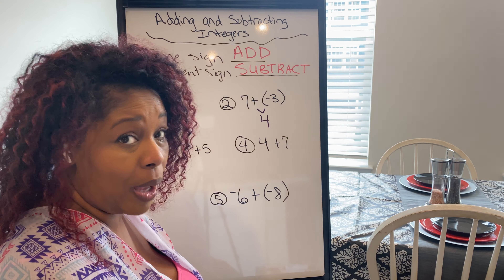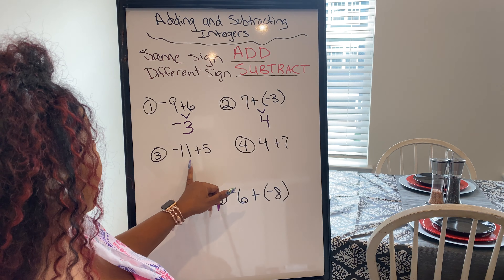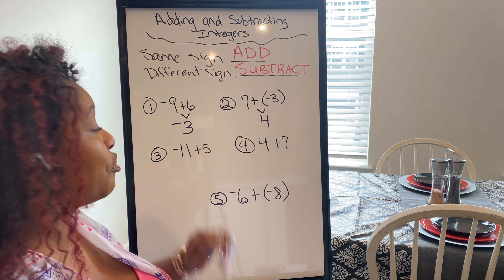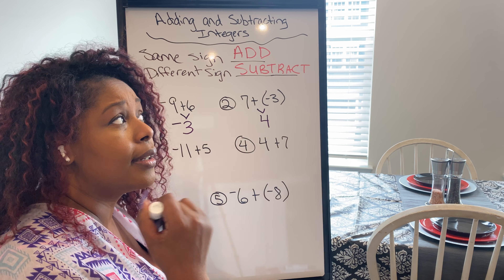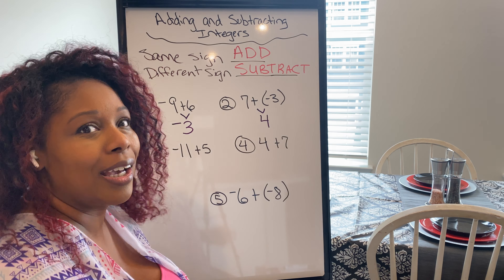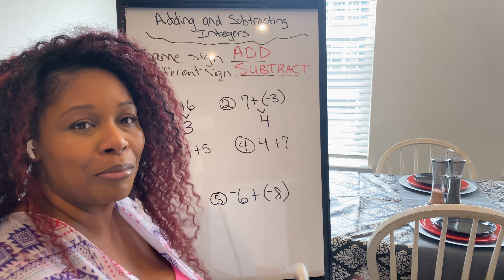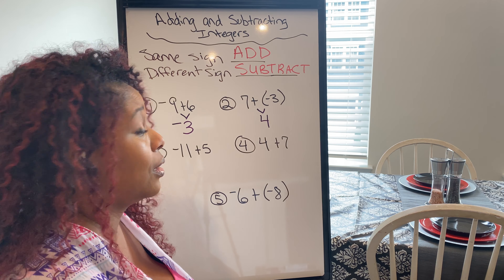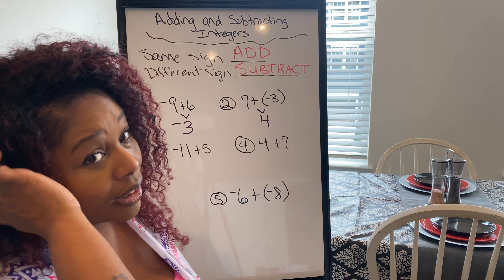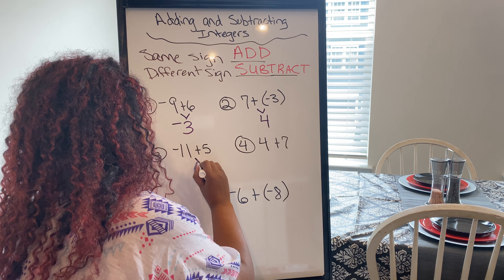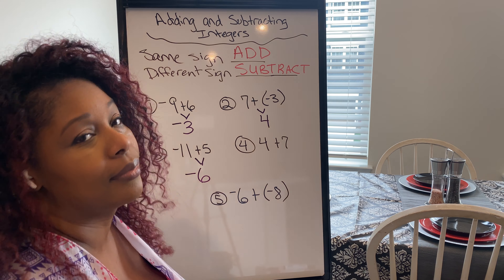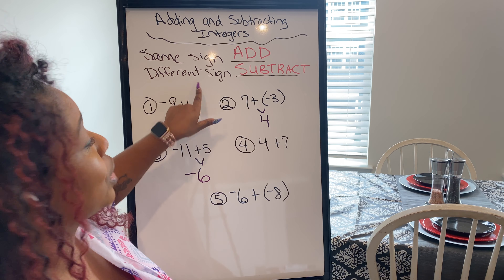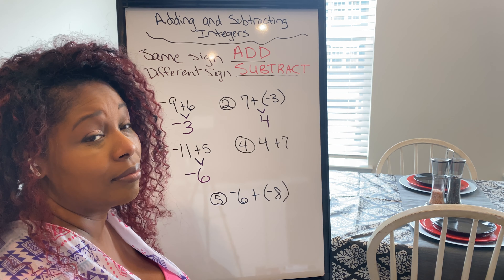Negative 11 plus 5 — I'll give you about 10 seconds to figure it out before I write the answer. Some of you may have said 16 — that's because you didn't go back to our rule. Some of you may have written positive 6 without the negative sign — positive 6 and negative 6 are different numbers, so that would be marked wrong. But that's okay, this is why we practice.